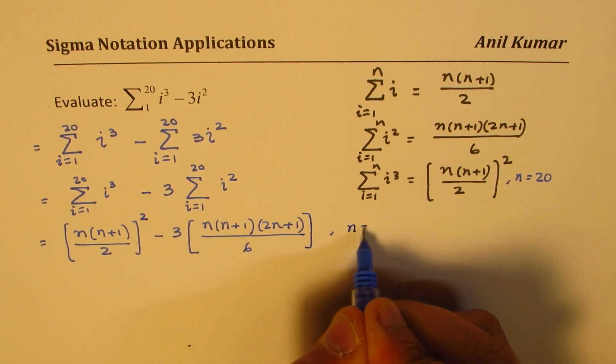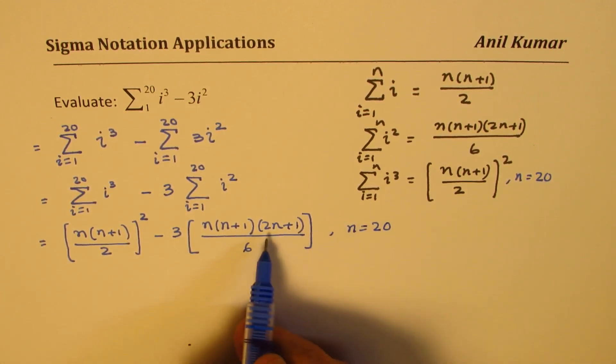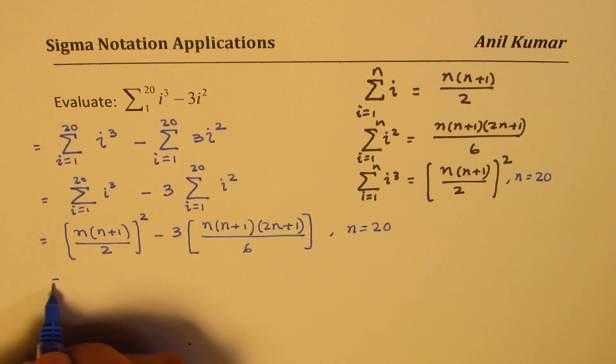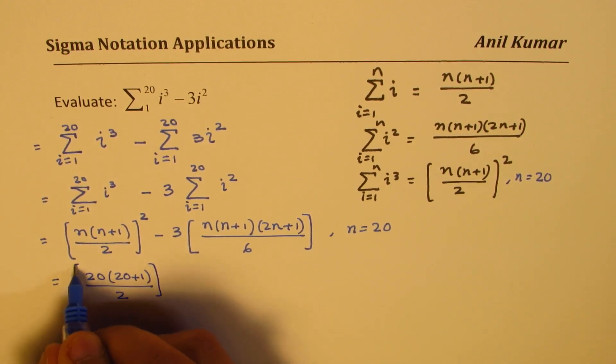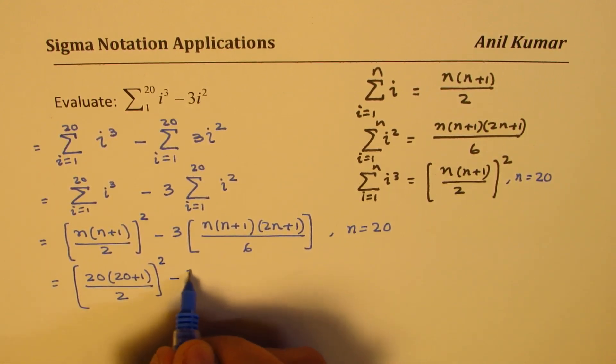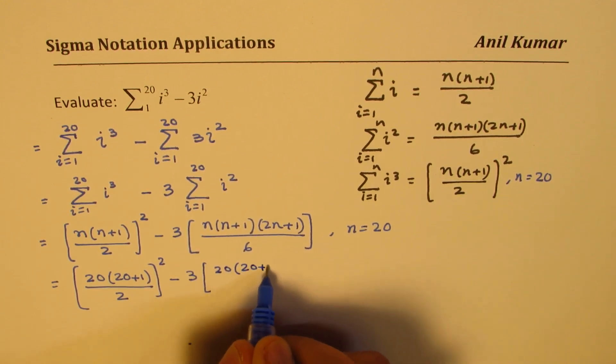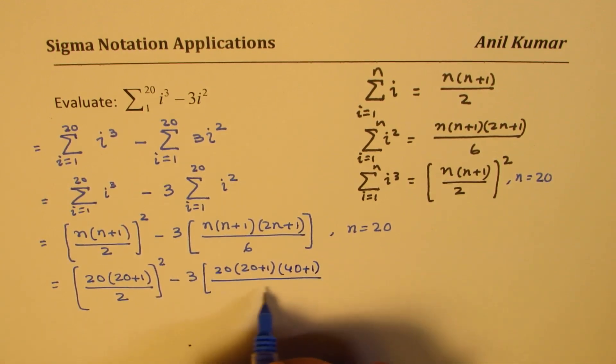Now we know n for us is 20. So we will substitute 20 here. So what we get here is 20 times 20 plus 1 over 2 whole square minus 3 times 20 times 20 plus 1 times, let me write 40 plus 1 over 6.